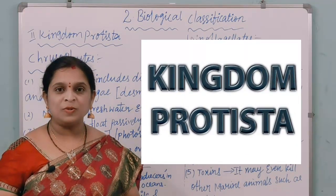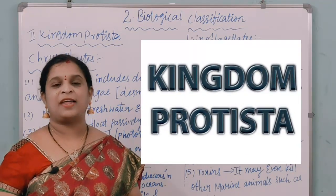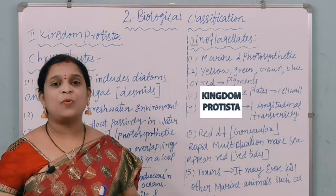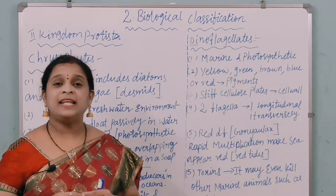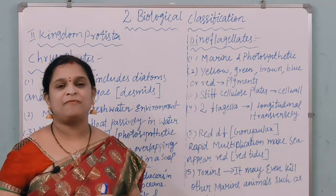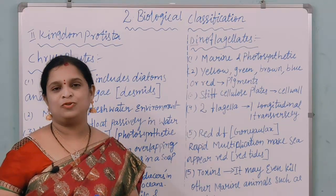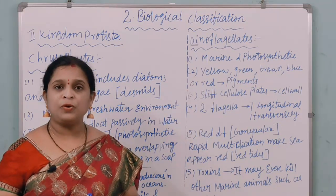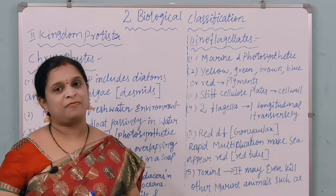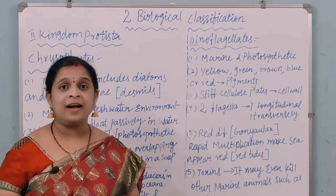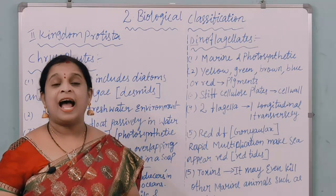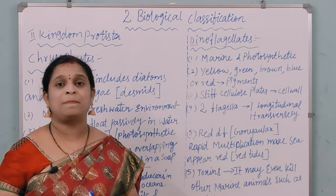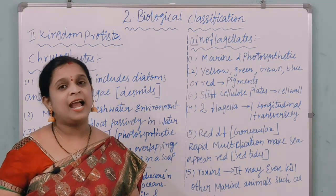Protista includes the single-celled eukaryotic organisms. Eukaryotic organisms means it consists of a well-defined nucleus with membrane-bound organelles. A few members of Protista consist of flagella and cilia for body movement, and it also forms a link to the other kingdoms like Plantae, Animalia, and Fungi.